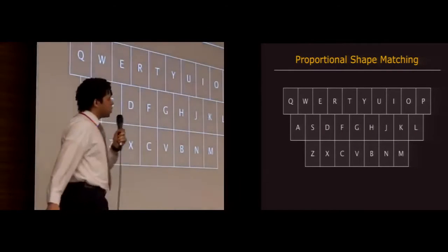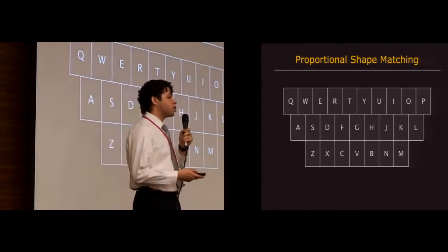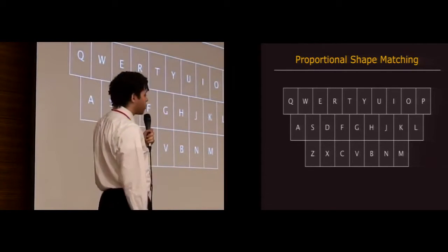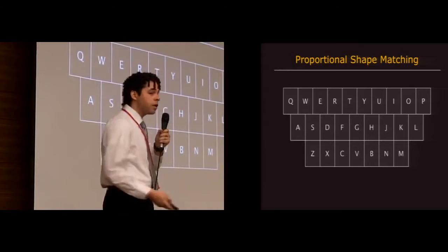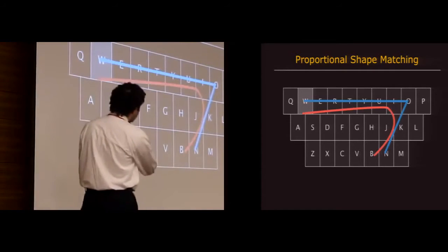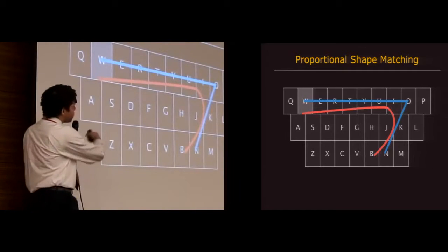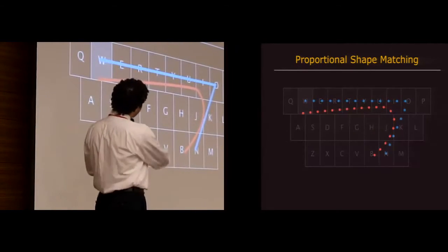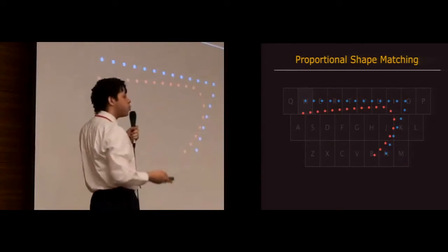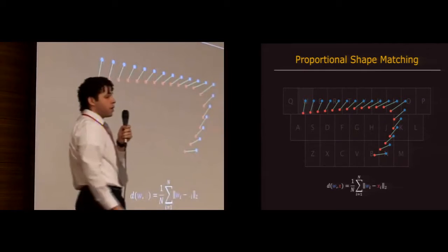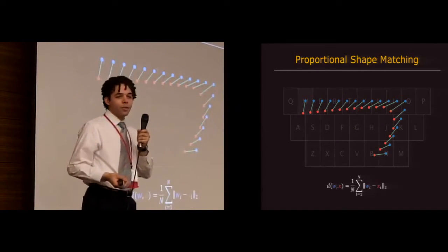So how does it usually work? It usually works in part by proportional shape matching. Let's suppose that you want to type the gesture for the word wan, as in Korean wan, which looks like this, right? But the gesture you actually make looks like this. To find the similarity between the gesture you made and the ideal trace, the system will sample both gestures into N equidistant points and then compute the average distance between corresponding points. Hopefully, wan is the word that comes up.